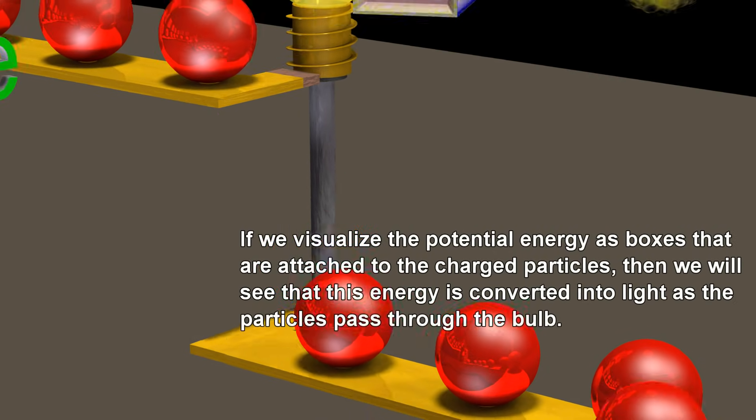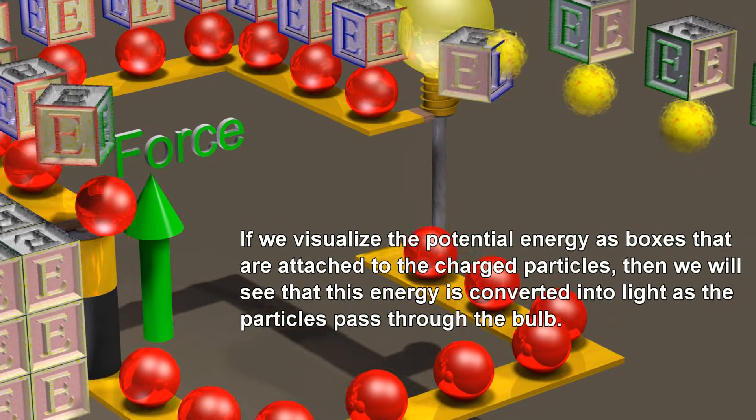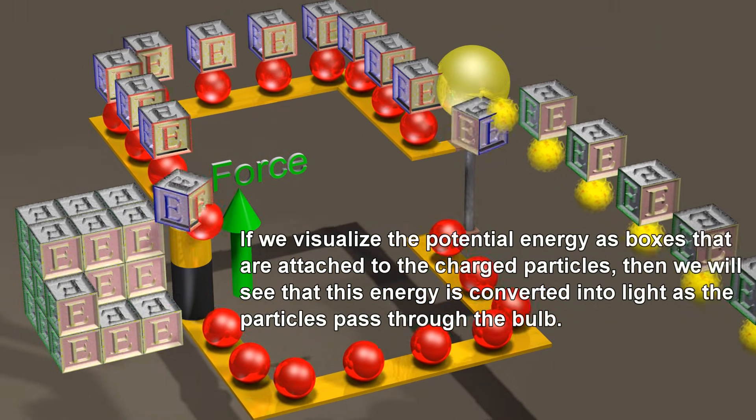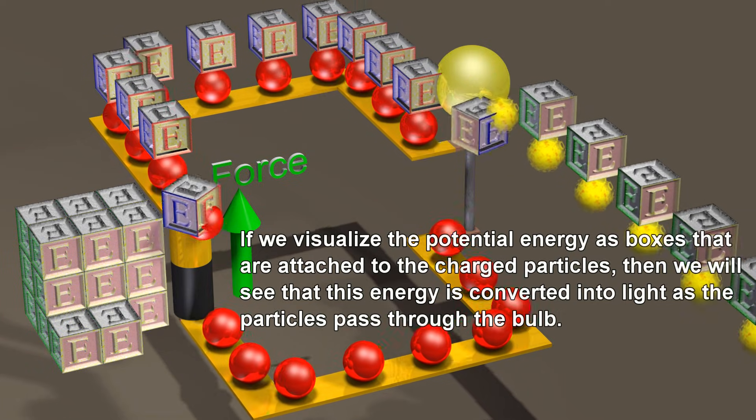If we visualize the potential energy as boxes that are attached to the charged particles, then we will see that this energy is converted into light as the particles pass through the bulb.